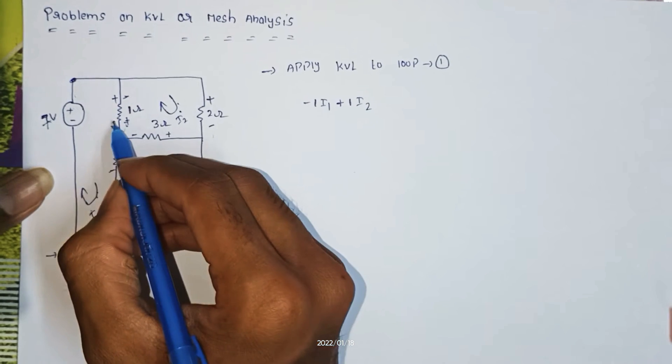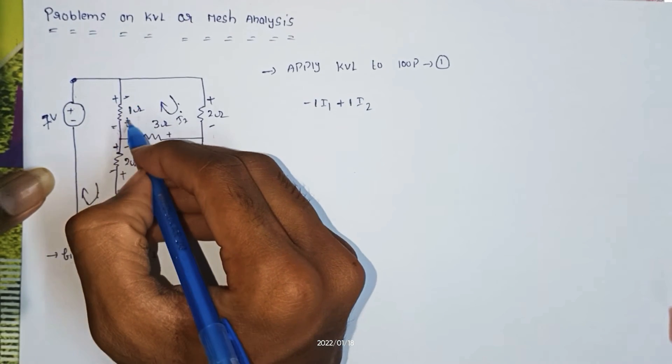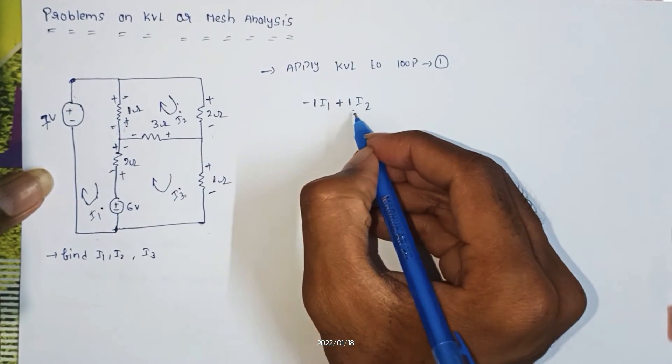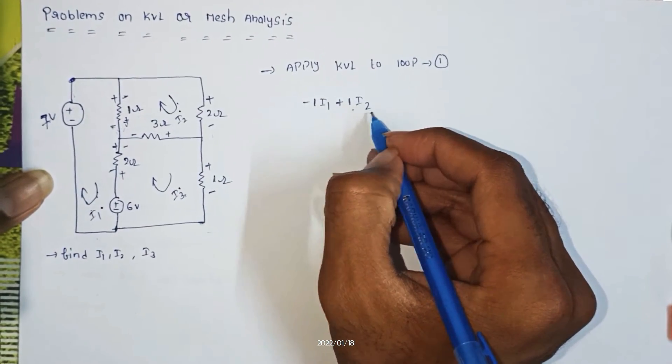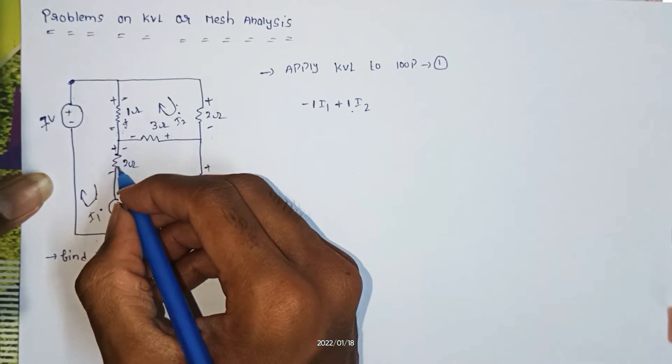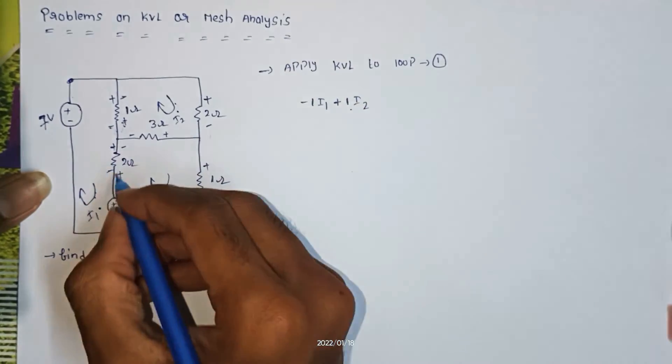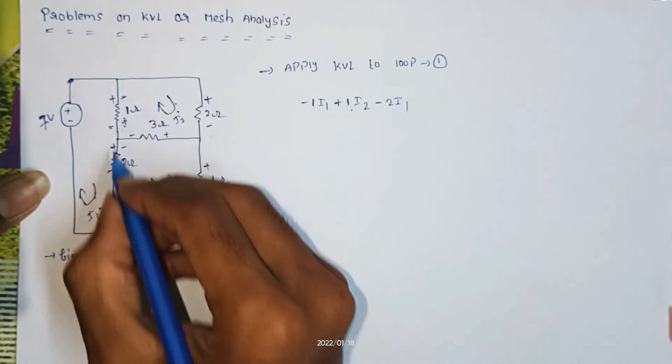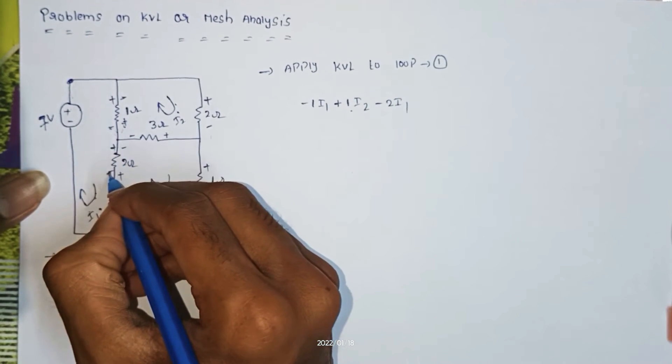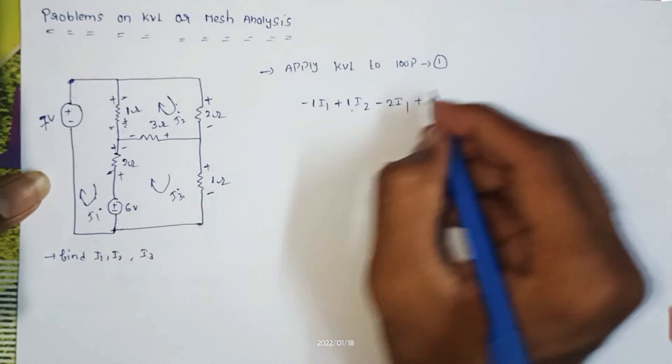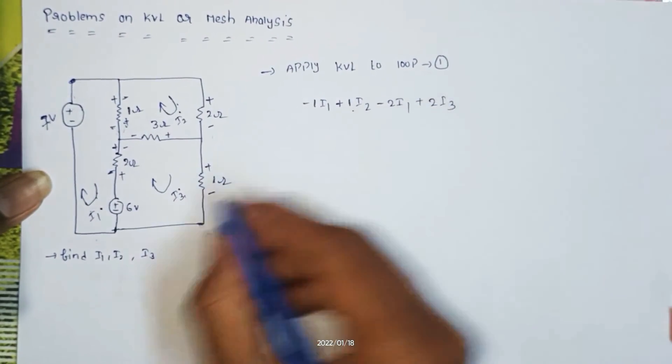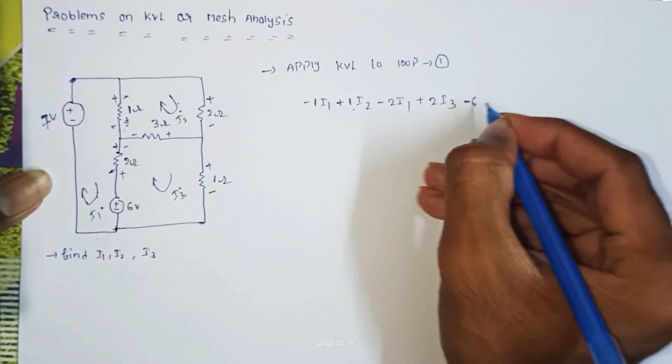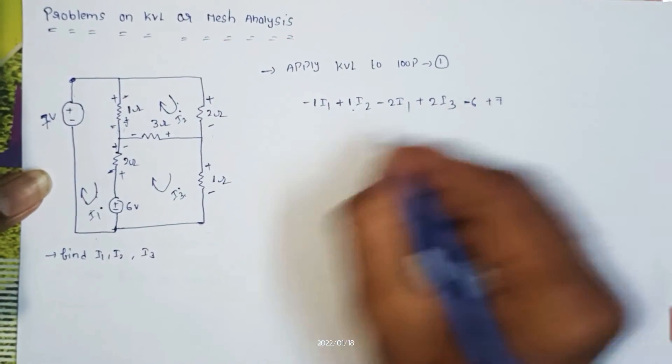1 I2 plus I2. Next, I2 times 2, so minus I1. Minus I1. Negative terminal, so I3. Next, add minus plus 7.